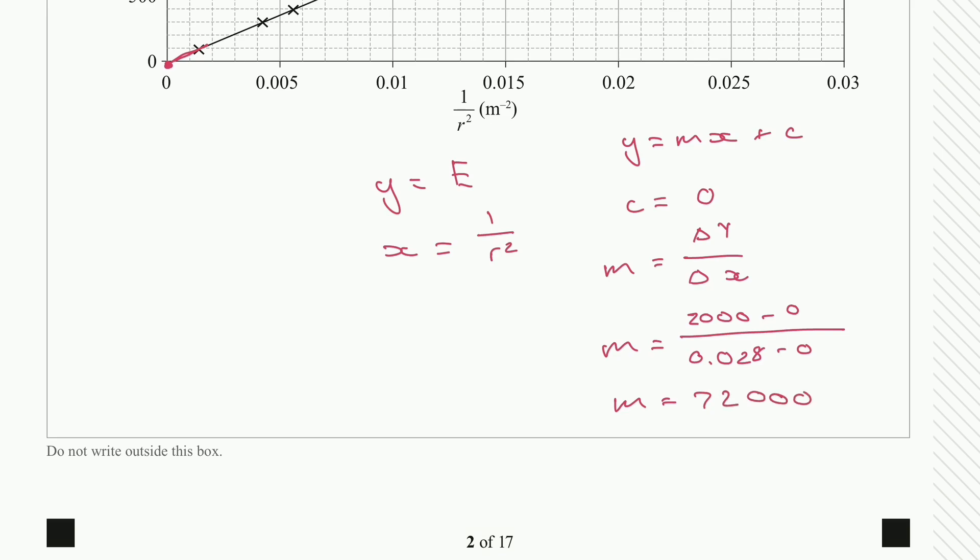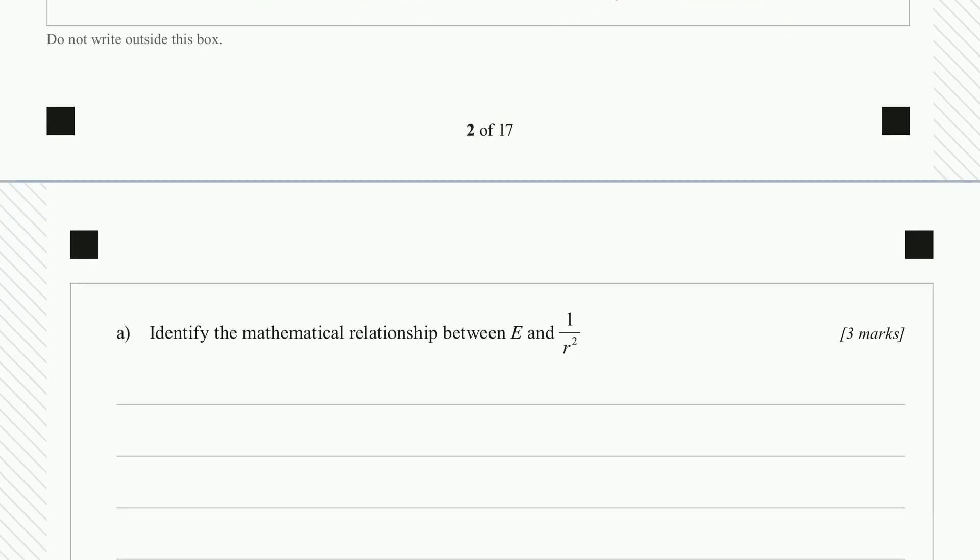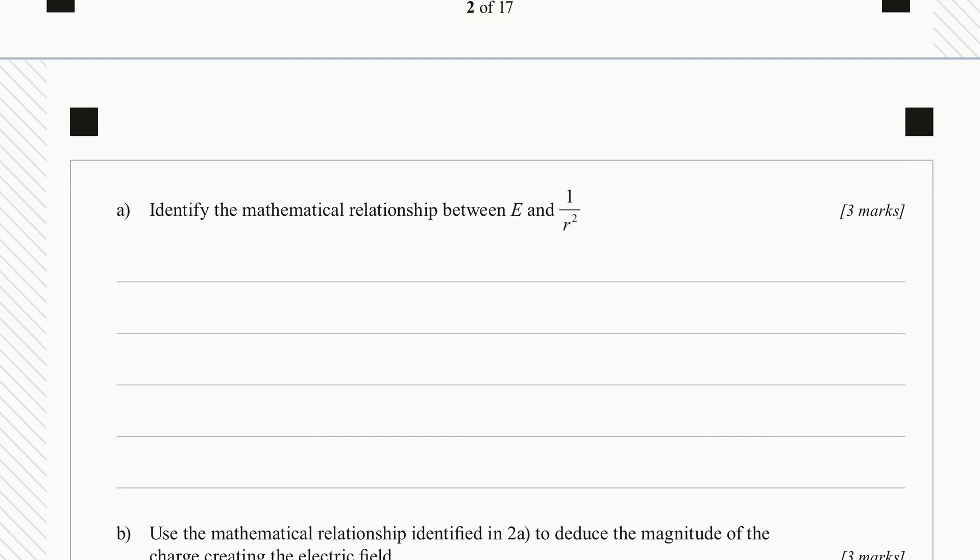So now we can put all this information in together. So our x is going to go there, our y is going to go here, and our gradient is going to go here. And we'd get a function of E is equal to 72,000 multiplied by 1 over r squared. So that would be our solution for part a, putting it in the terms that we've been specified or asked to do, which is the E and the 1 over r squared.